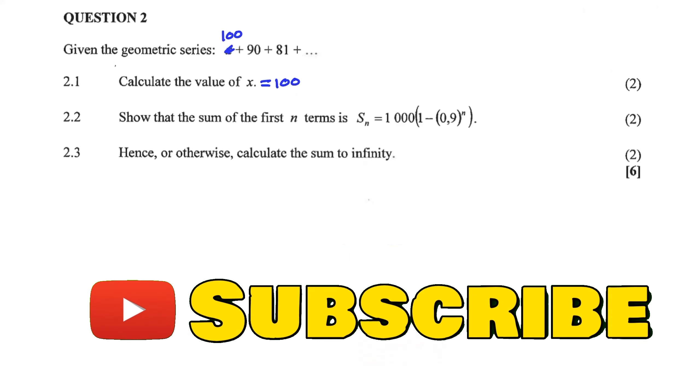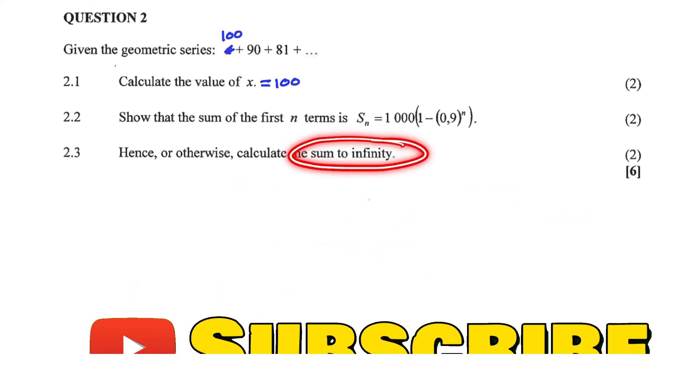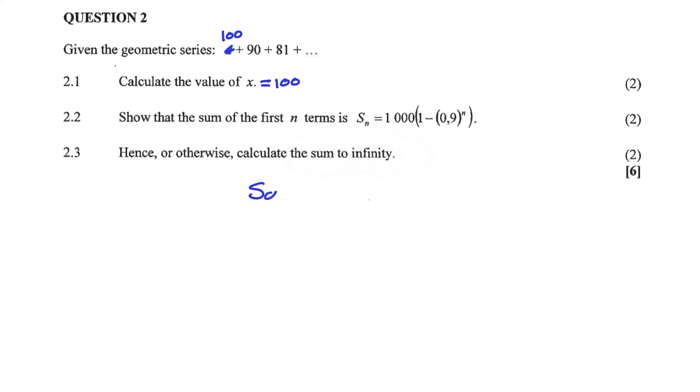In our third question, we have calculate the sum to infinity. So the sum to infinity is equal to A over 1 minus R. But remember, for the sum to infinity to exist, R needs to be between negative 1 and 1. The series needs to be convergent. And we know that R is equal to 0.9. And that does satisfy this restriction of a convergent series.